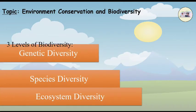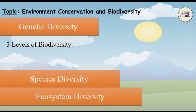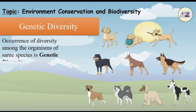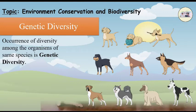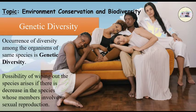Genetic Diversity: Occurrence of diversity among the organisms of the same species is called genetic diversity. For example, each human being is different from one another. The possibility of wiping out a species arises if there is a decrease in the species whose members are involved in sexual reproduction.